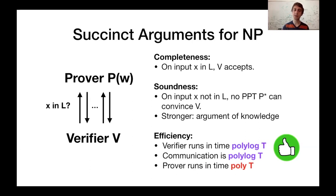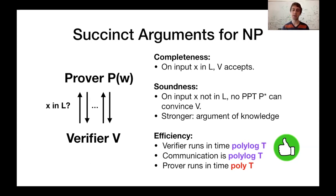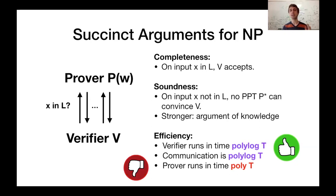On the other hand, we usually require that the prover runs in time which is polynomial in the time bound t, where this could be some arbitrary polynomial. And really, this arbitrary polynomial is a huge bottleneck in making succinct arguments actually useful and practical in everyday scenarios.